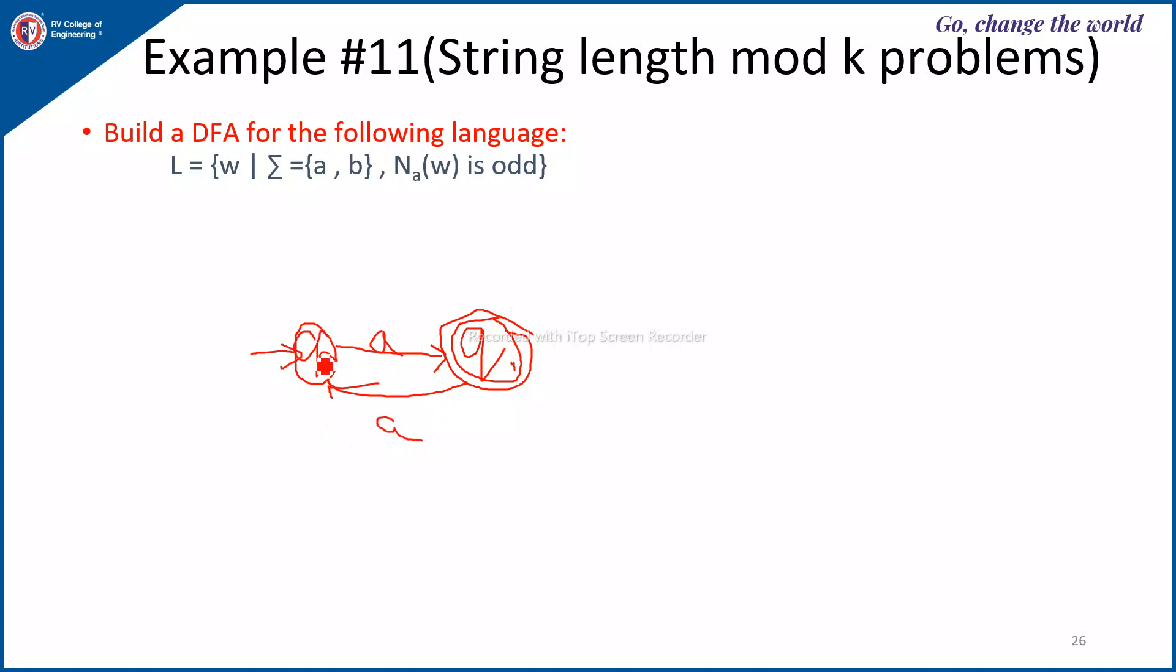Now on B's for both Q0 and Q1, because I do not require the count of B's, so you put a self-loop. So this is the required machine. Count of B's is not required to be checked.